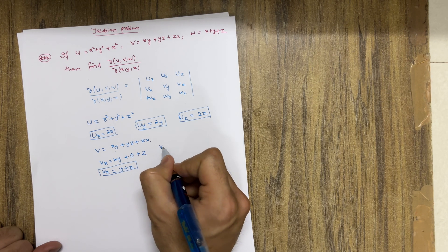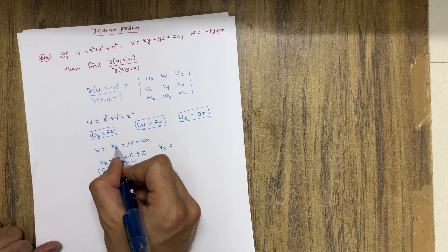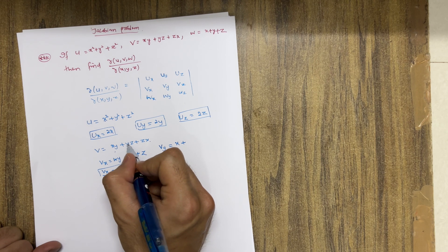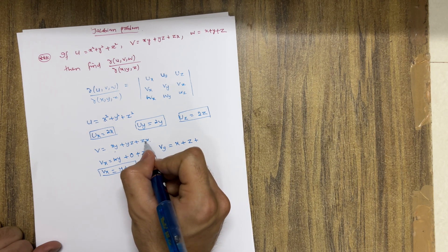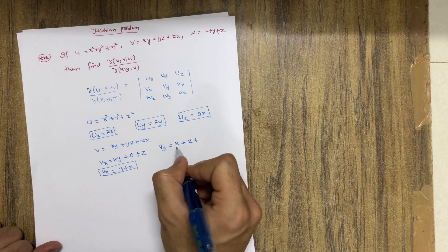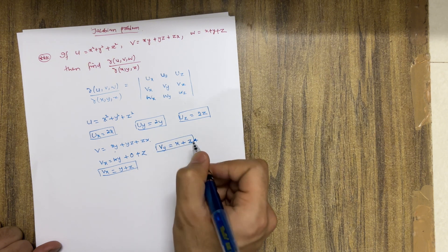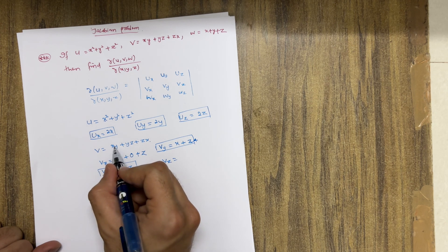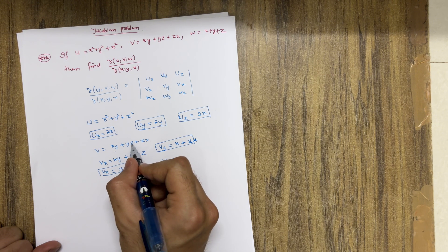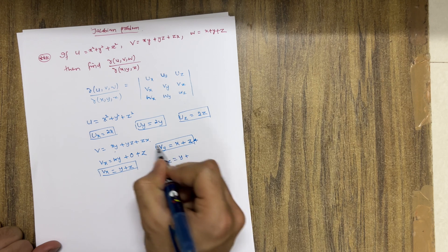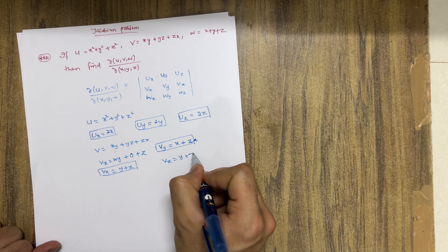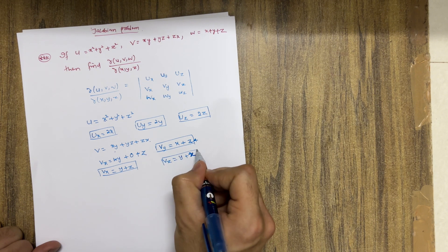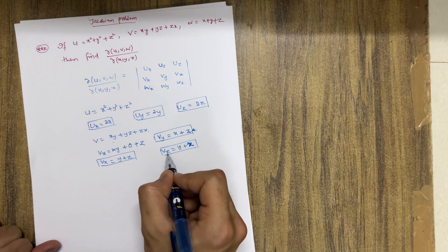Differentiating v with respect to y: xy gives x, yz gives z, and zx has no y so gives 0. Therefore vy = x + z. For vz, differentiating with respect to z: xy has no z so gives 0, yz gives y, and zx gives x. So vz = y + x.